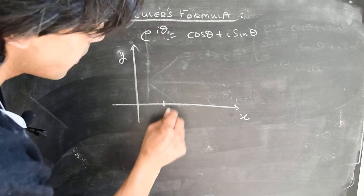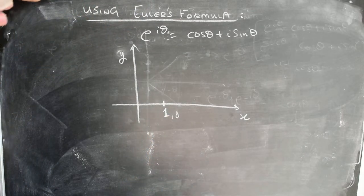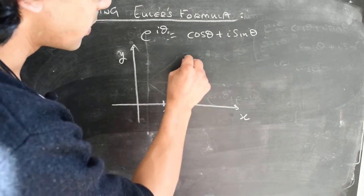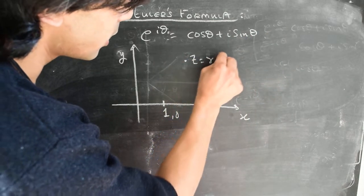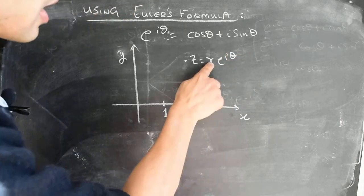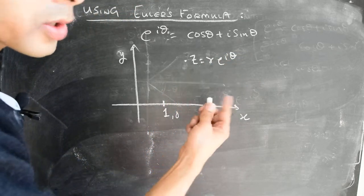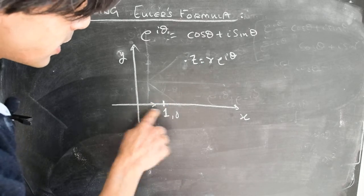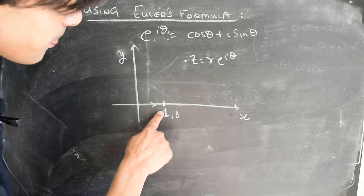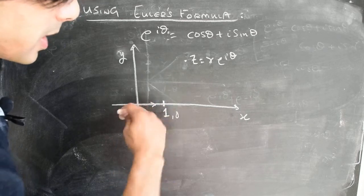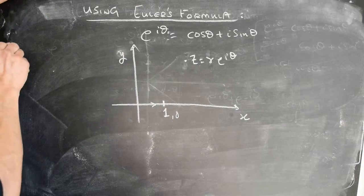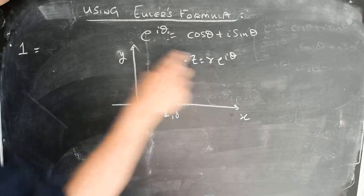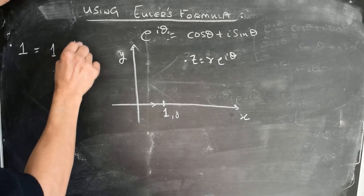Let's say we want to represent the point (1, 0) using the polar representation. The polar representation of a complex number z is of the form r·e to the power i·theta, where r is the magnitude of z and theta is its argument — the angle it makes with respect to the x-axis. In this case the magnitude is 1 and the angle is 0, so the complex number 1 can be represented as 1 times e to the power i·0.